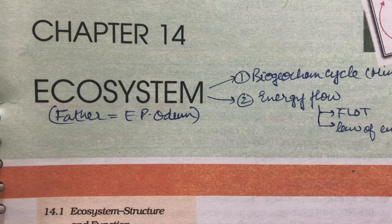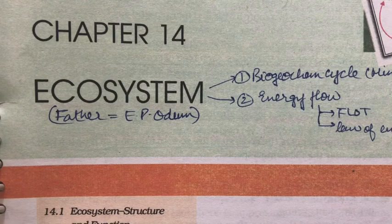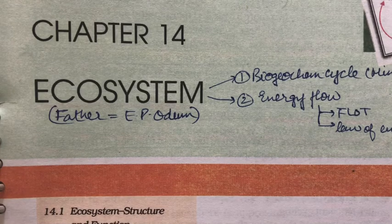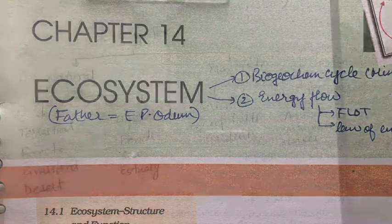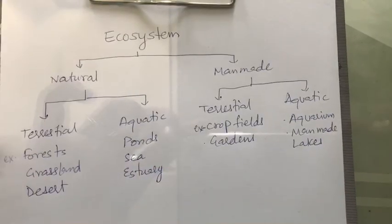Let's start with Chapter 14: Ecosystem. An ecosystem is the functional unit of nature where living organisms interact among themselves and also with the surrounding physical environment.